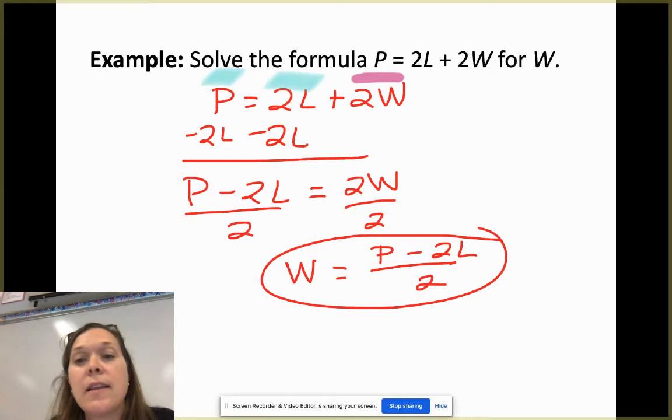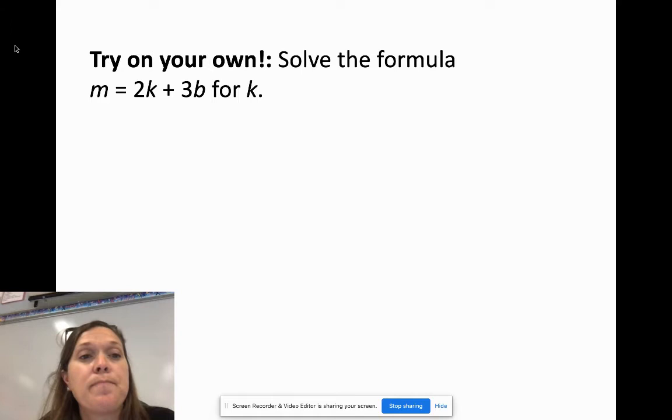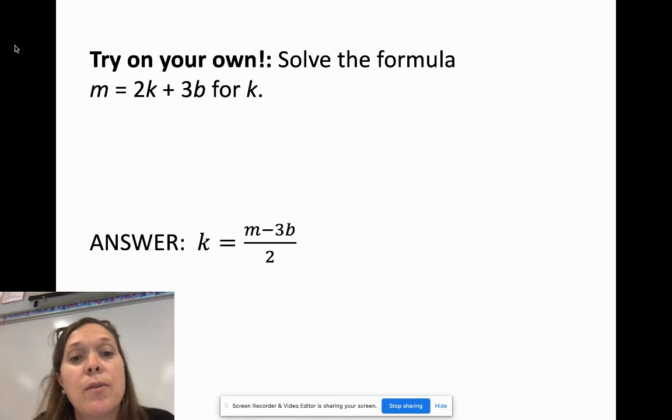Now I'd like you to try one on your own. Please check your work. Did you get K is equal to M minus 3B over 2? Hopefully you did. If not, go back and recheck your work and see if you can get yourself to that point.